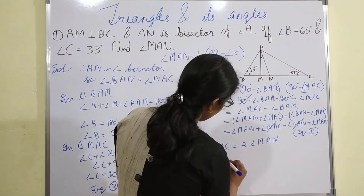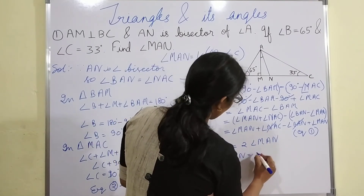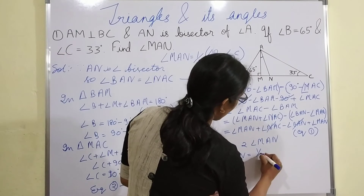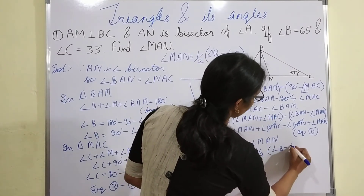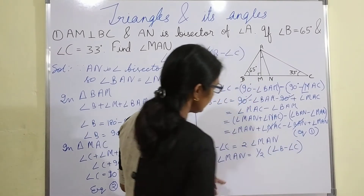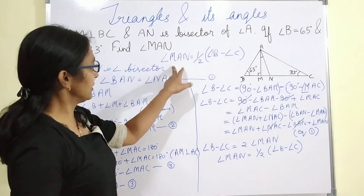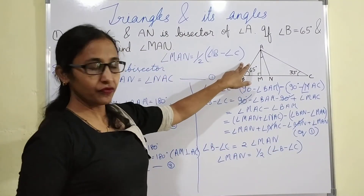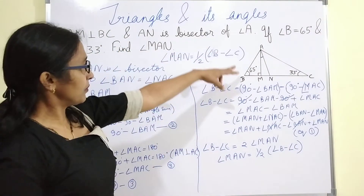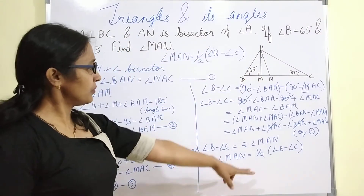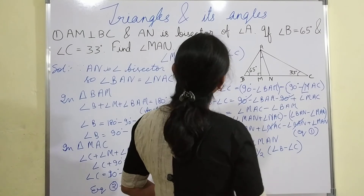Therefore, angle MAN equals half of angle B minus angle C. Hence it is proved. Now putting the given values into this proved result to find the answer.